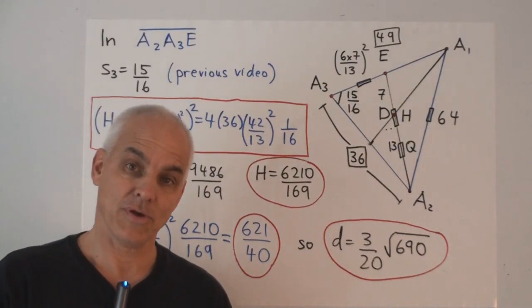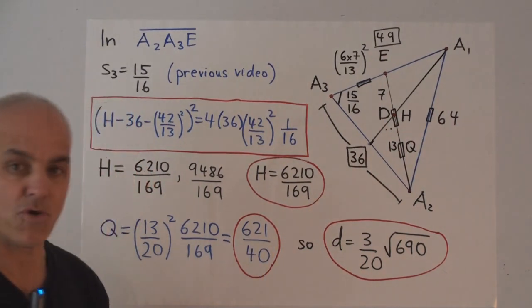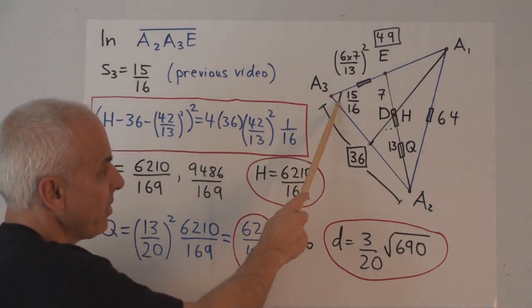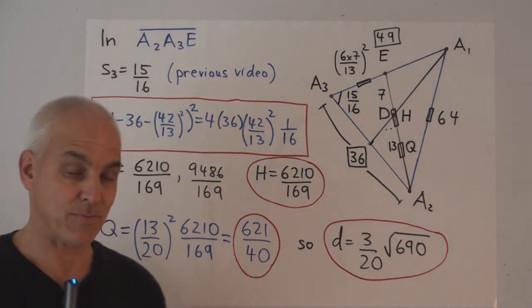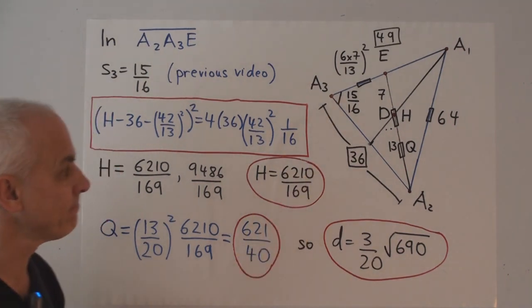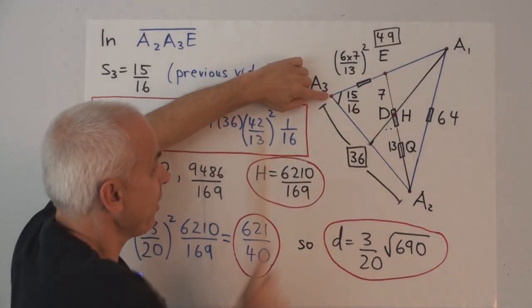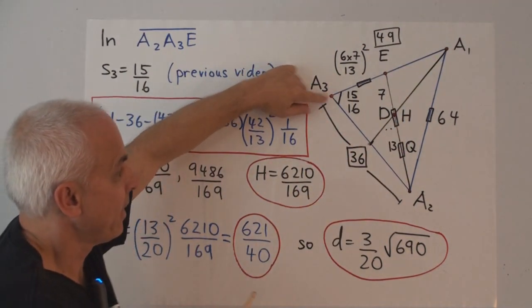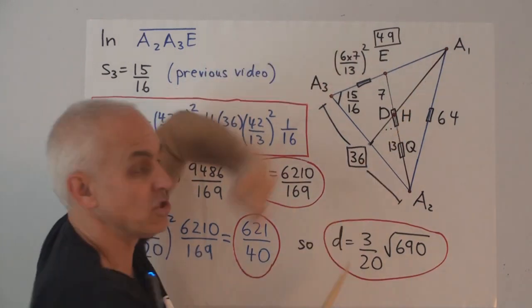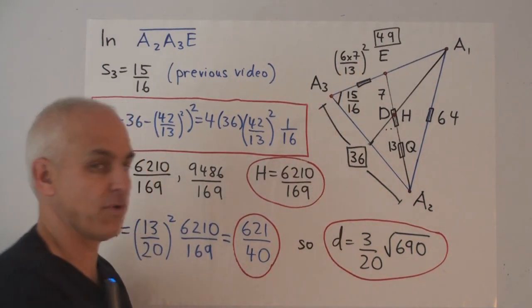So, let's transform everything now into rational trigonometry language. We replace the lengths 6, 7, 8, with the quadrants 36, 49, and 64. The spread here, we calculated in last video, that was what we called s3, and it was equal to 15 over 16. That's the spread right there. We'll call this quadrant here, from A2 to E, we'll call that H. And this quadrant here, well, it's some fraction of 49. The affine ratio is 6 to 13, so the ratio of the quadrants will be (6/13)² times 49. So, this quadrant is (6/13)² times 49, or 6 times 7 over 13².